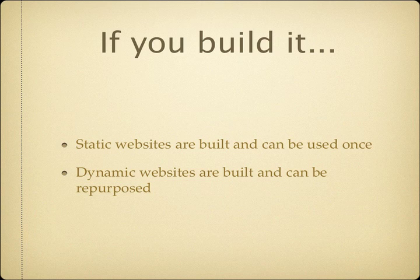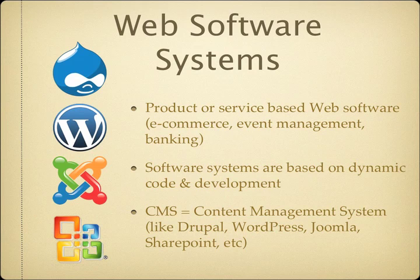Static websites — if you build it, you build it once, and that's the only time you can build it, and it's done. Dynamic websites are built and can be repurposed over and over again. So that leads us into web software systems — turning that set of dynamic code into an actual software system that can be repurposed, like Drupal, like WordPress, like Joomla. These are product or service-based things like e-commerce, event management, or online banking, where it's using dynamic combination, gathering variables, looking at databases, and presenting you with a different output every single time.